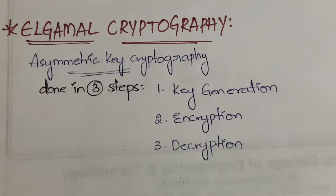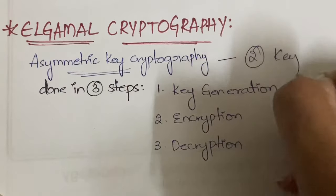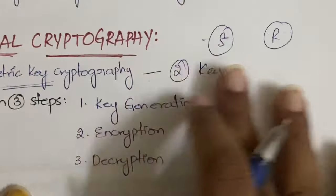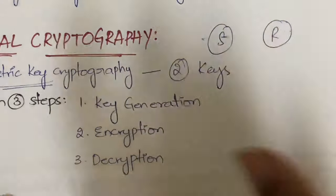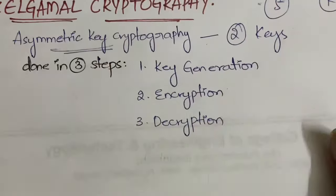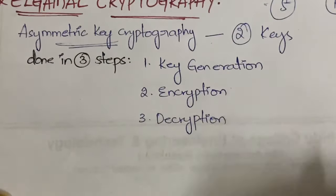In asymmetric key cryptography, you will be using two different keys on the sender side and receiver side. Normally in the case of symmetric cryptography we use the same key, but in asymmetric we use different keys. That is all about asymmetric key cryptography. Next, we have three steps which are common to all the algorithms.